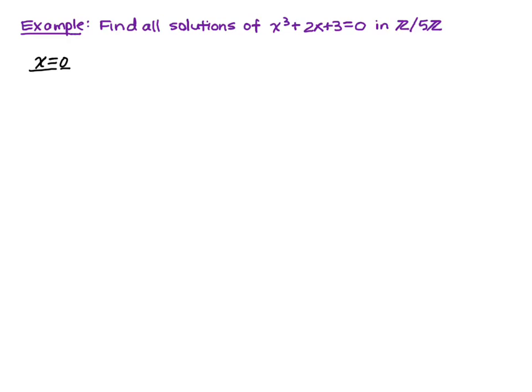We'll start with x equals 0, and we'll substitute. So we'll get 0 cubed plus 2 times 0 plus 3 is going to be equal to 0 plus 0 plus 3, so that's equal to 3. So x equals 0 is not a solution.